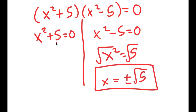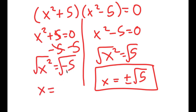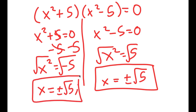Now for x² + 5 = 0, I can subtract 5 on both sides to get x² = -5. If I take the square root, I get x = √(-5), which equals √5 · i. So these are my four solutions to this equation.